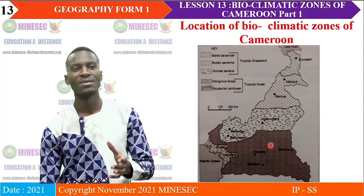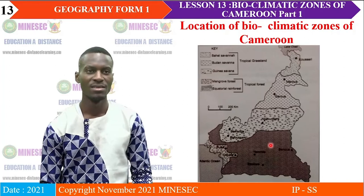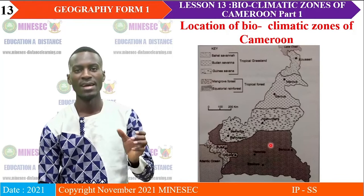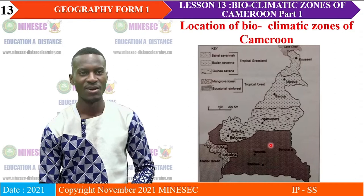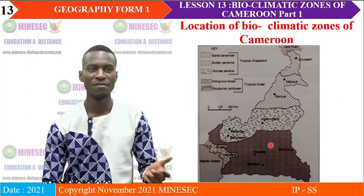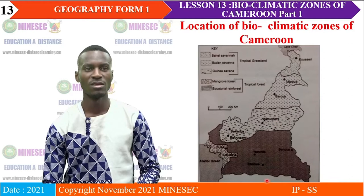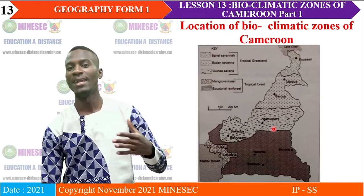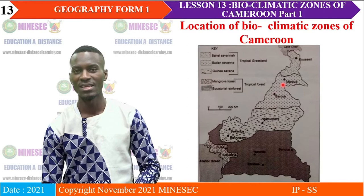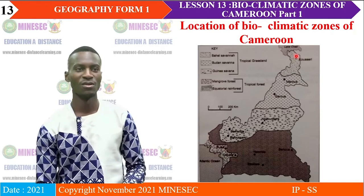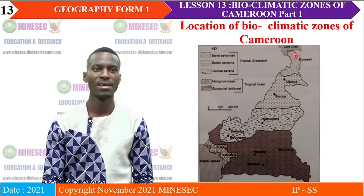We are going to see that these different bioclimatic zones are influenced by climate. The greater the amount of rainfall, the greater the number of trees. In areas where we have a lot of water, we have a lot of trees. As we move towards the north, the amount of rainfall decreases, so we have fewer trees and more grass. As we move further north, the grass will also disappear, leaving a bare soil. We are going to examine each bioclimatic zone one after another.